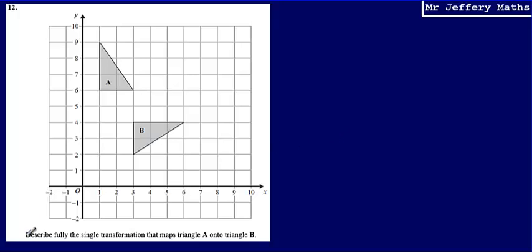This is question 12. Here I'm asked to describe fully the single transformation that maps triangle A onto triangle B. So what I need to do is figure out what transformation has taken triangle A onto triangle B.